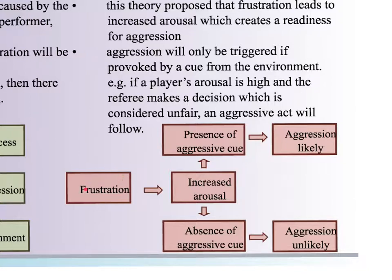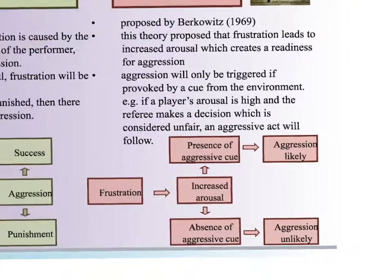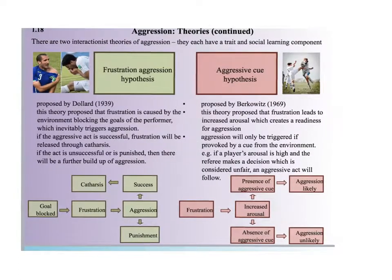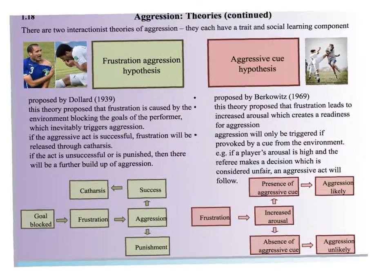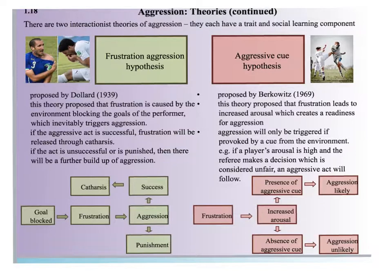In a team sport, if a teammate is getting frustrated and increasingly aroused, as a captain or coach we need to remove them from the situation — as seen in cricket, where a captain might ask a player to field somewhere else to calm down. To recap the four theories: the instinct theory is about aggression being within you; the frustration-aggression hypothesis involves a goal being blocked; the social learning theory is about learning aggression from others; and the aggressive cue hypothesis involves an environmental trigger such as a bad decision.